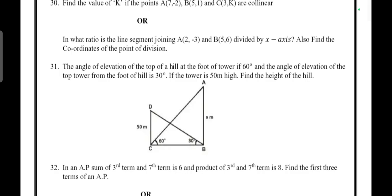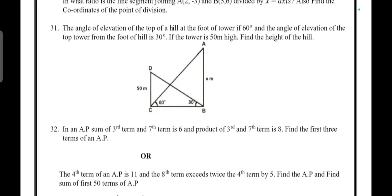The angle of elevation of the top of a hill at the foot of a tower is 60°, and the angle of elevation of the top of the tower from the foot of the hill is 30°. If the tower is 50 meters high, find the height of the hill.